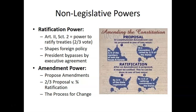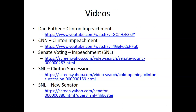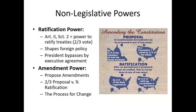Congress also has the power to propose and ratify amendments. Proposing an amendment requires a two-thirds vote, while ratification requires three-fourths of the states. Amendments are the mechanism for change in our government. Those are the constitutional powers of the legislative branch, and I'll see you next time for our last lecture to finish out the unit on the legislative branch. Have a great day.